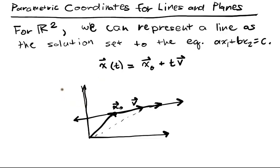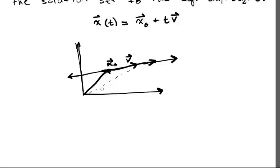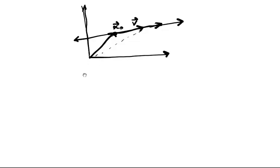So we just use the tip-to-tail method to encode a line using a parametric formula. Well this works in a general Euclidean space. This kind of idea. And that's kind of the nice thing about it.